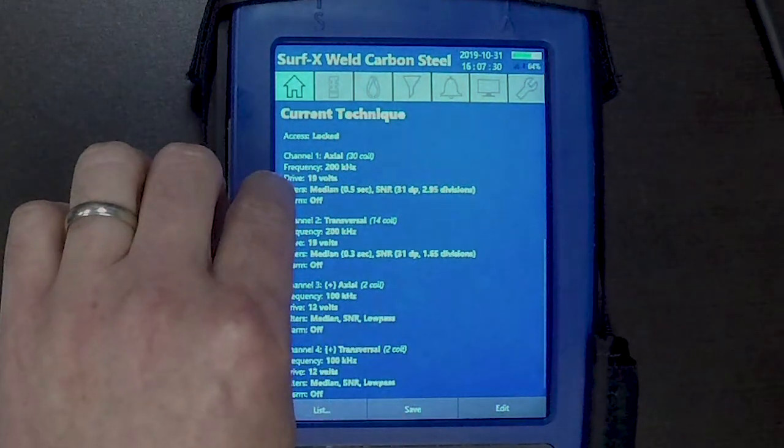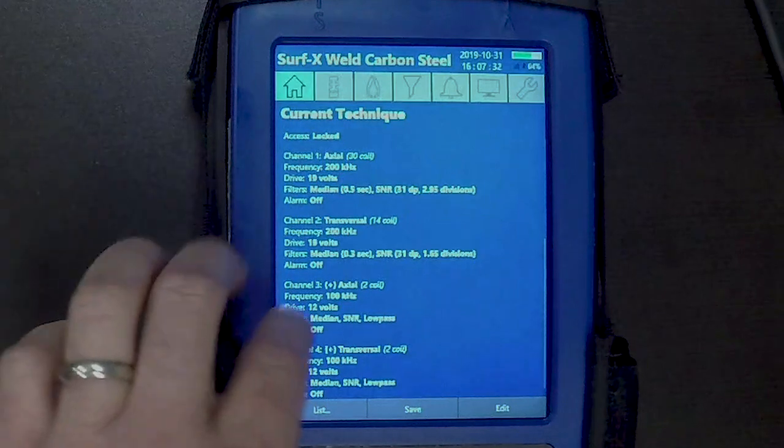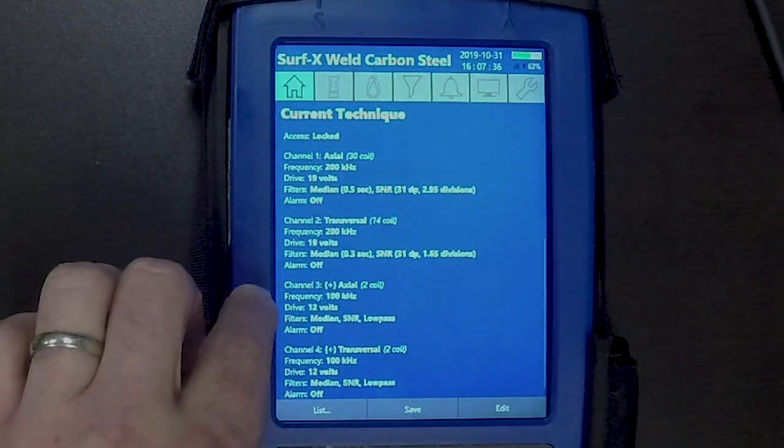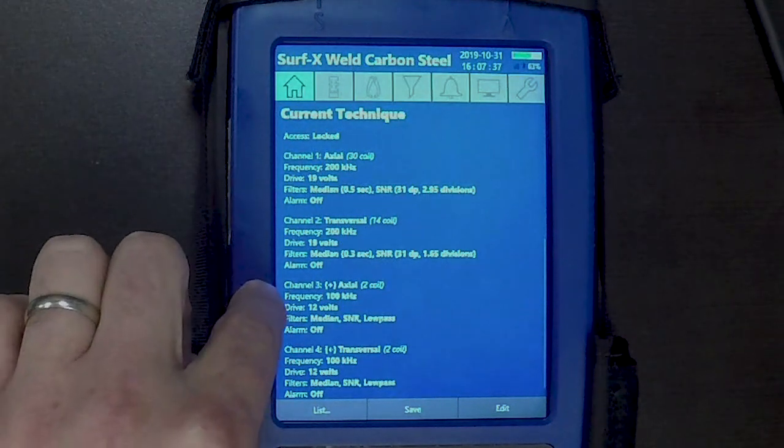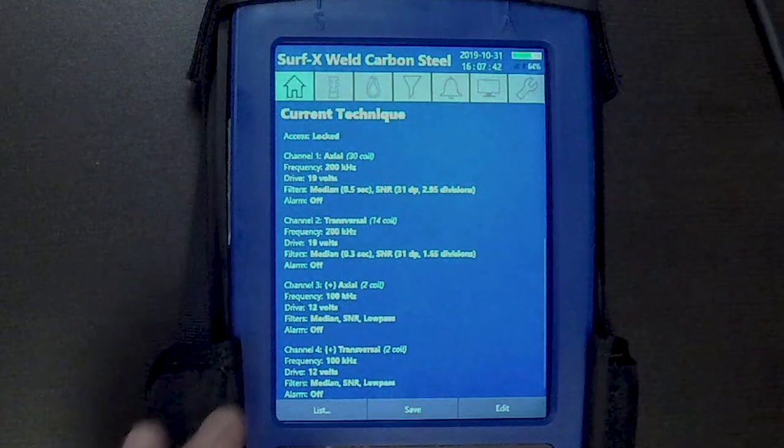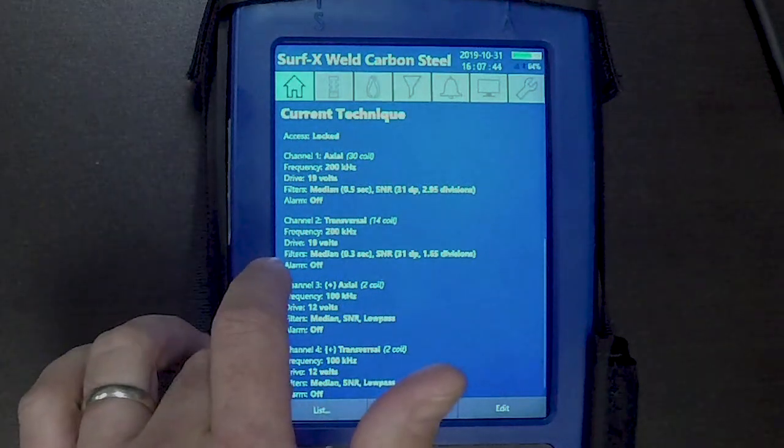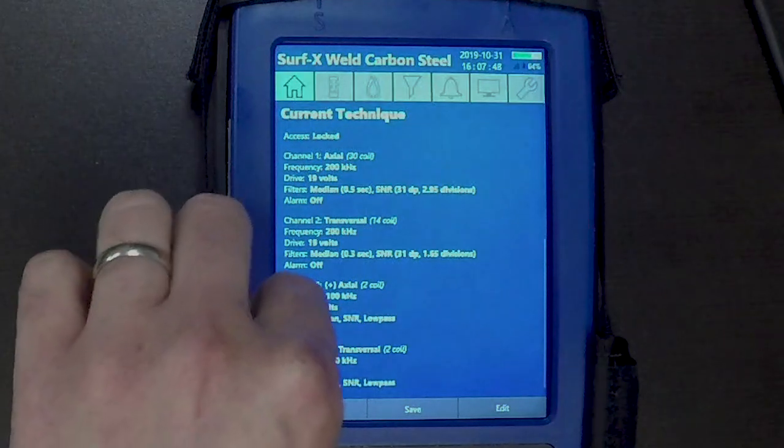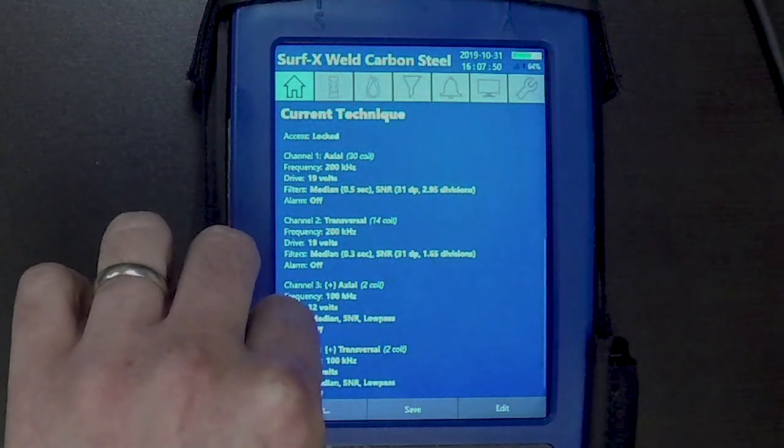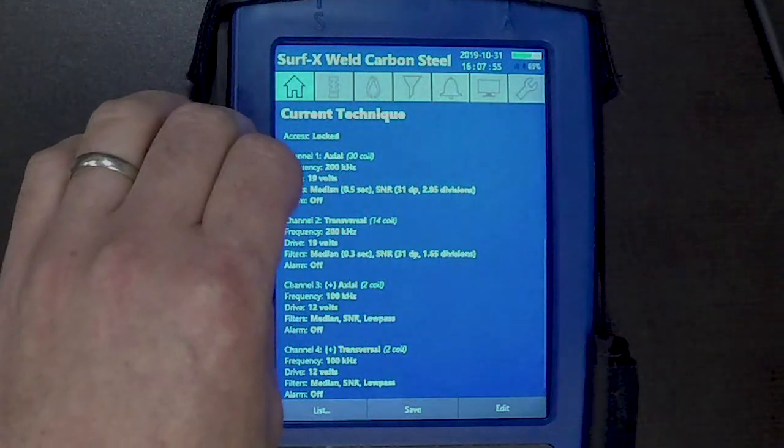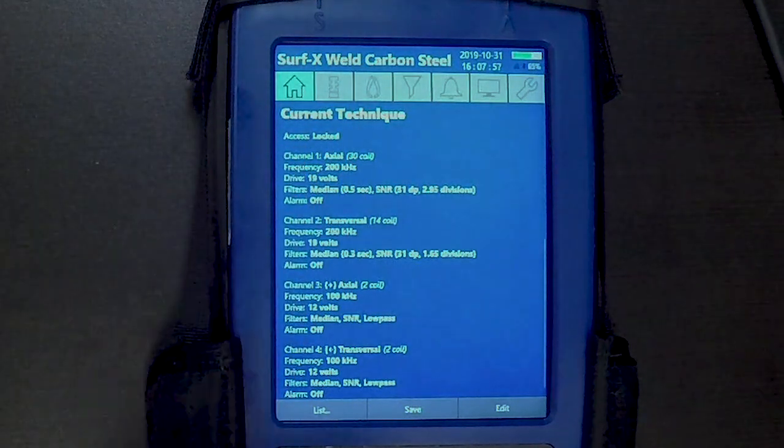Channel three and four are actually the two plus point coils. One is set up for axial, meaning both coils are picking up the axial, and then channel four is both coils picking up the transverse. You can notice here it's running at 100 kilohertz, so you actually have independent frequencies between the channels, between your array coils and your plus point coils.